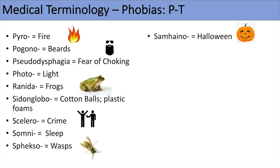The next prefix is samhyno, which refers to Halloween. So samhynophobia or samhanophobia would be a fear of Halloween. Some people have a fear of the imagery relating to Halloween — the costumes, the atmosphere, and so on. The next prefix is skolosi or skolikai, which refers to worms. So skolisophobia or skolikophobia would be a fear of worms.